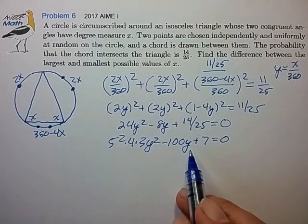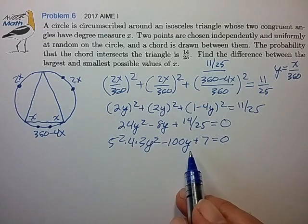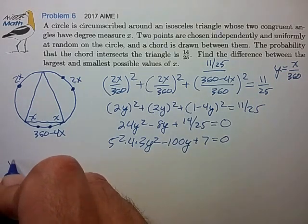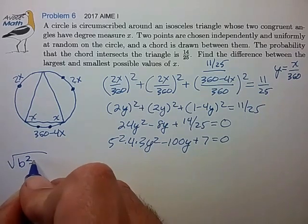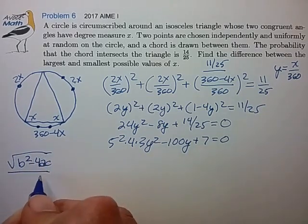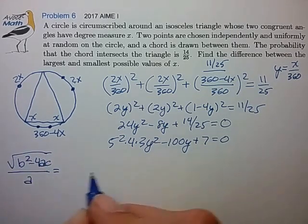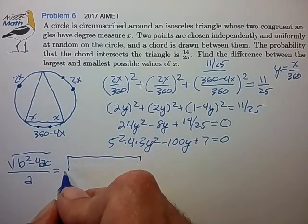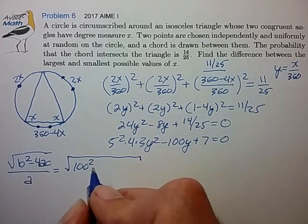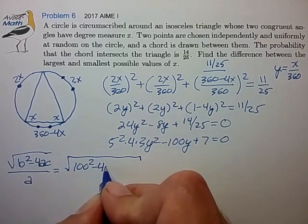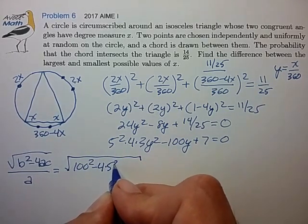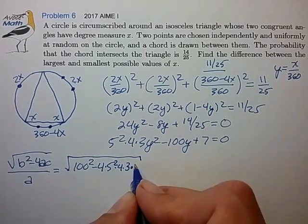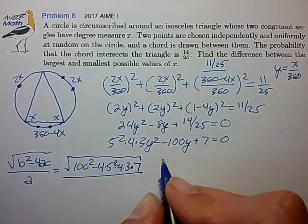We have to work with this quadratic, and we know from the quadratic equation that the difference between the two roots of this equation are given by the square root of B squared minus 4AC over A. So B squared is 100 squared minus 4 times A times C over A.